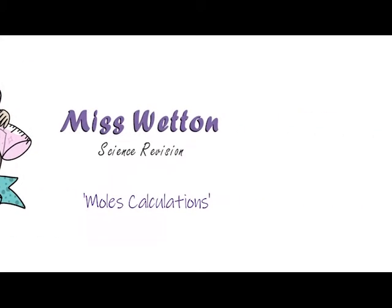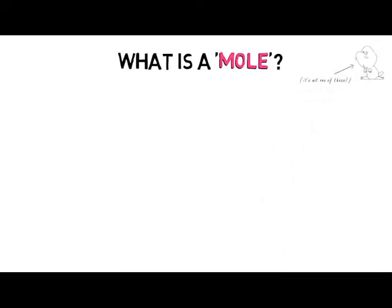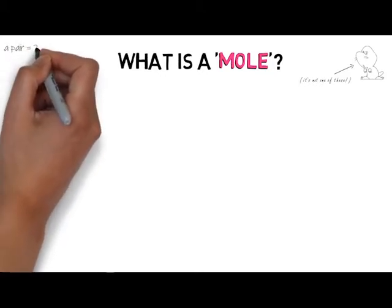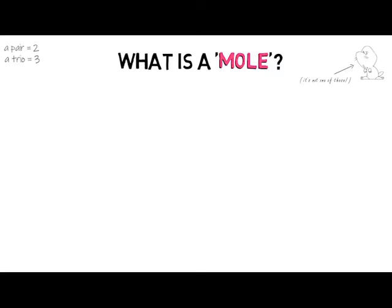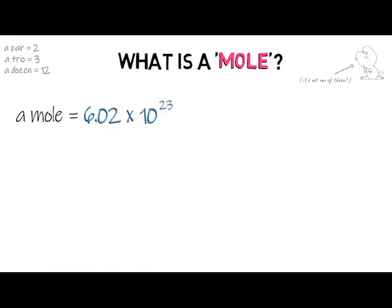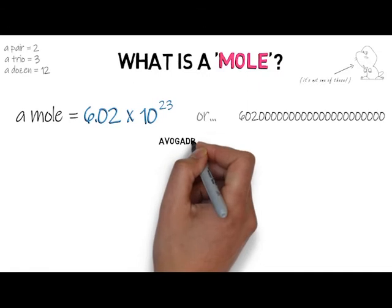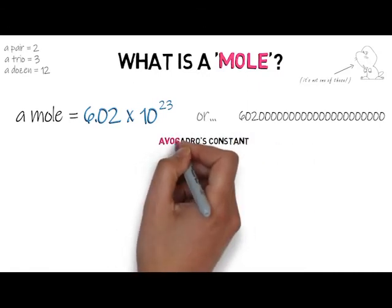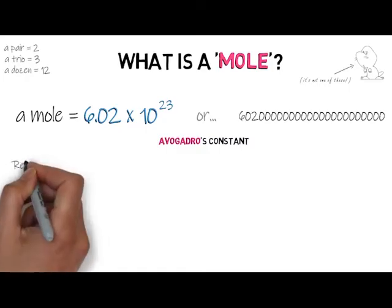The first thing to think about is what actually is a mole. In chemistry we don't mean an animal. A mole is just a word we use to describe a particular number. Like a pair means two, or a dozen means 12, a mole is the word we use to describe the number 6.02 × 10²³. That's written in standard form because the full number is really large. It's called Avogadro's constant, and it's a bit of a mouthful, so we just call it a mole instead.